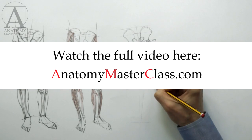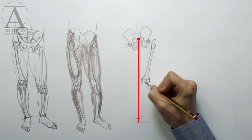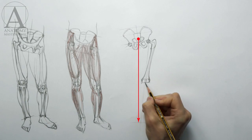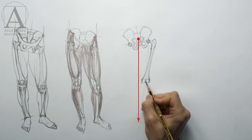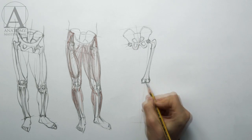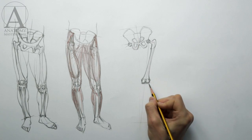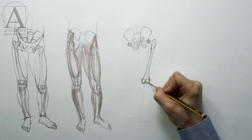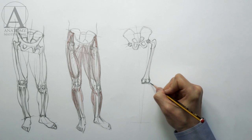In the contrapposto position, the center of gravity of the human body vertically projects onto the footprint of the supporting leg, so that the whole weight of the body is supported by just one leg. Another leg helps keep the body balanced.